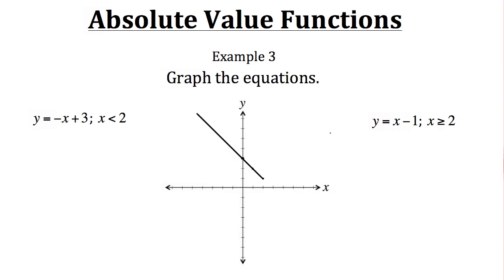Now for the other equation: y equals x minus 1. We start at negative 1 with a slope of positive 1, going up 1 over 1, and continue. Keep in mind it's only for when x is greater than or equal to 2, so it starts at x equals 2 and keeps going in the positive direction. As you can see, we use two linear equations with restricted domains to make the graph of the absolute value function.